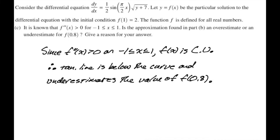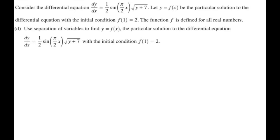For part D, use separation of variables to find the particular solution to dy/dx equals 1/2 sine of pi over 2x times the square root of y plus 7, with f of 1 equals 2. Separating: dy over the square root of y plus 7 equals 1/2 sine of pi over 2x dx. Integrating both sides — the right side uses the fact that there's a pi over 2 inside, giving a 2 over pi factor outside, and the integral of sine is negative cosine.